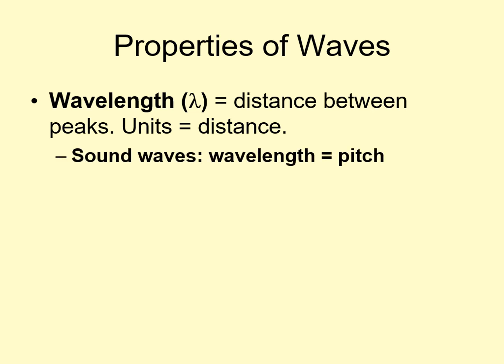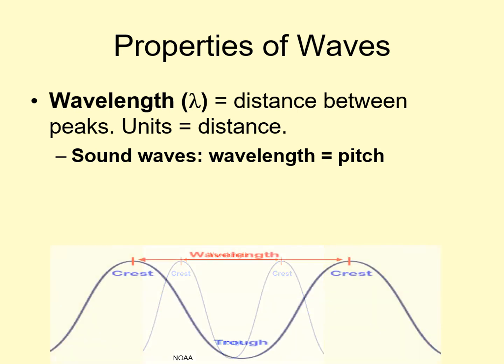Consider sound waves, for example. A short wavelength sound is what we call a high pitch. Something like this. On the other hand, a long wavelength is a low pitch, like this. Wavelengths are usually labeled with the Greek letter lambda, the thing that looks like an upside-down Y.